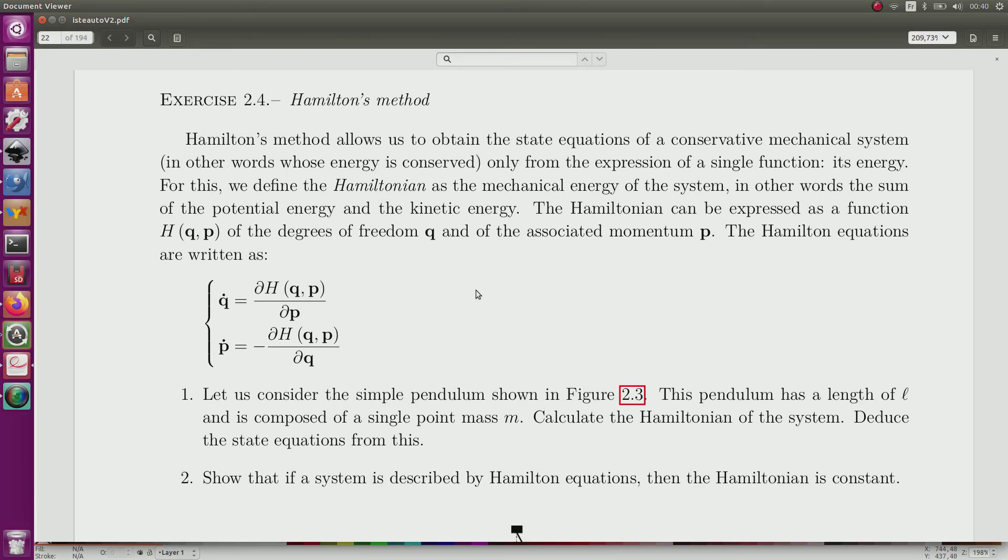Hamilton's method is classical in mechanics in order to obtain a state equation of a mechanical system. We need for this that the mechanical system is conservative, meaning there is no friction. The whole energy is conserved. So in such a case, if we know an expression of the total energy of the system, and it corresponds to the Hamiltonian, then we can find directly the state equation of the system.